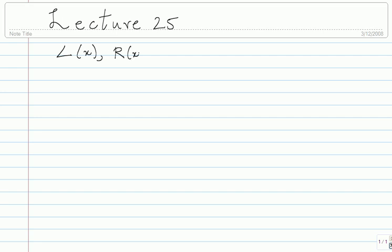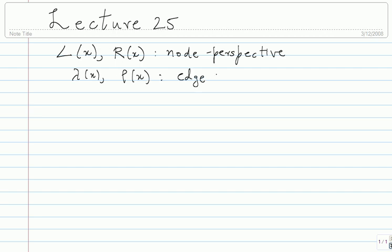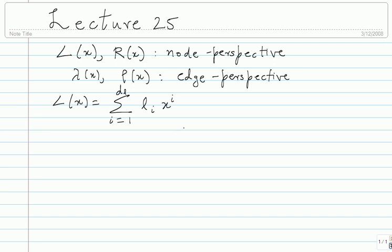I had notation — L(x) and R(x) were my node perspective degree distributions. L(x) was written as sigma i equals 1 to some d_L of L_i times x to the power i.